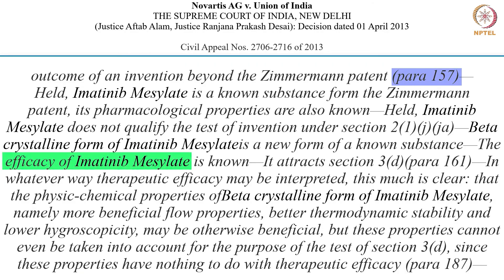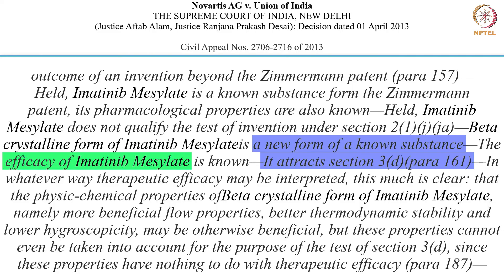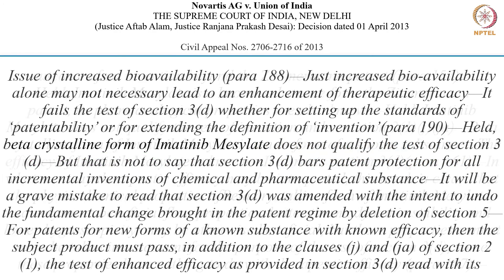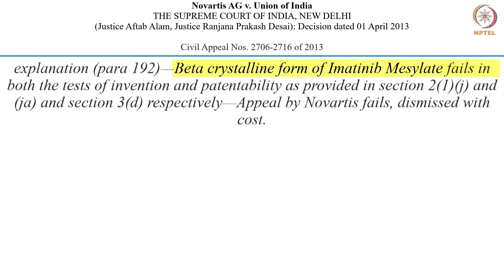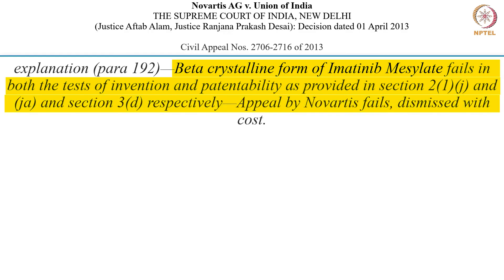The efficacy of imatinib mesylate is something the applicant needs to prove if he comes with a patent for a new form of a known substance under section 3D. The court held that the efficacy criteria that Novartis had put forward was not sufficient to demonstrate enhanced efficacy, and ultimately the patent was rejected. The beta crystalline form of imatinib mesylate fails in both the tests of invention and patentability as provided in section 21J and JA and section 3D respectively. The appeal failed, dismissed with costs.